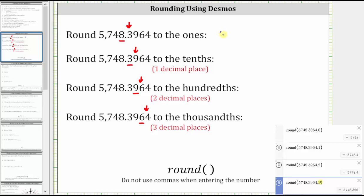Rounding to the ones, we have 5748. Rounding to the tenths, we have 5748.4. Rounding to the hundredths, Desmos gave us the same value of 5748.4, which is the correct value, but not in the correct form.